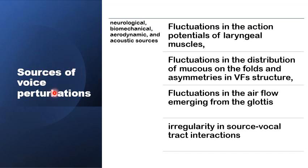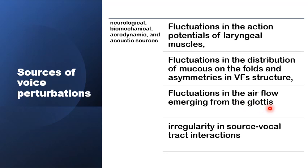Why do we have these perturbations in the voice even with normal voice production? The causes are multiple: neurological, biomechanical, aerodynamic, and some acoustic sources. There can be fluctuations in the action potential of the laryngeal muscles during phonation, fluctuations in the distribution of mucus on the vocal folds, asymmetry in the vocal fold structure, fluctuation in the airflow emerging from the glottis with each glottal cycle, and irregularities in the interaction between the glottal signal and the vocal tract.